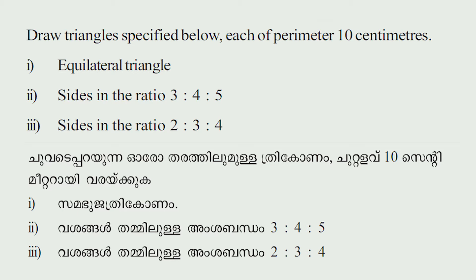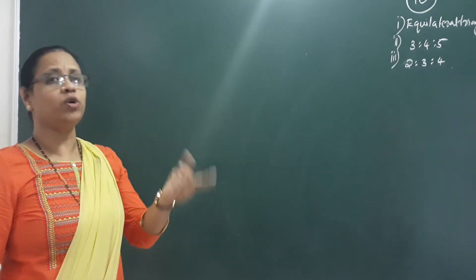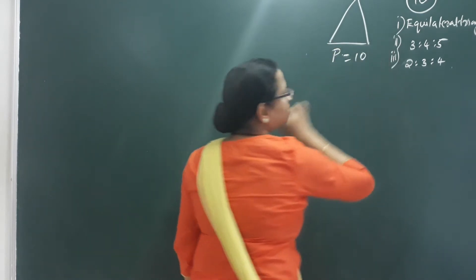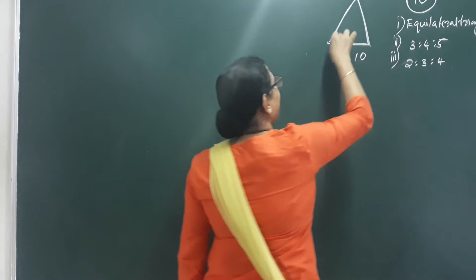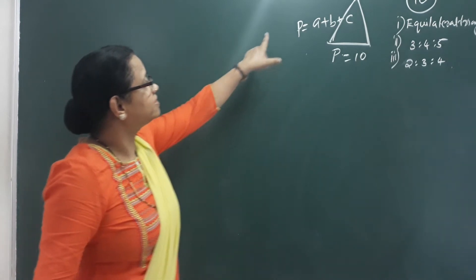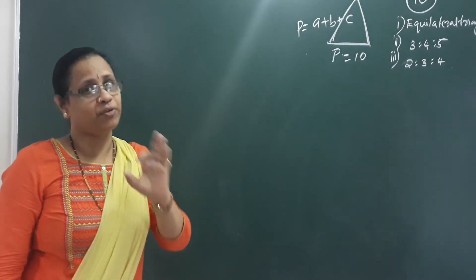Next question: Draw triangles specified below, each of perimeter 10 centimeters. First: equilateral triangle. Second: sides in the ratio of 3 is to 4 is to 5. Third: sides in the ratio of 2 is to 3 is to 4. The triangle perimeter is 10 centimeters, so A plus B plus C equals 10.